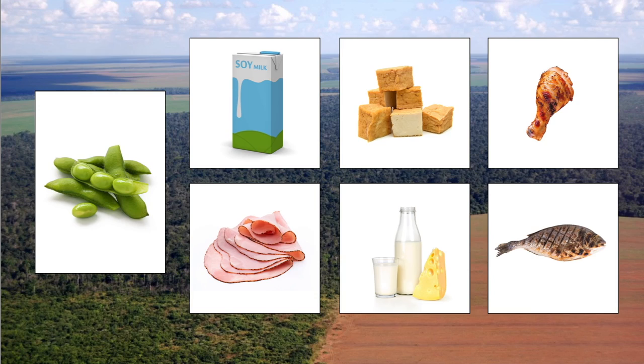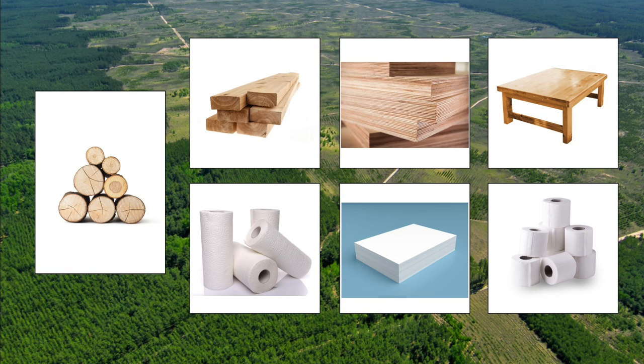Next, we've got the soybean industry. Soy can be found in a wide variety of health food products. But surprisingly, 70% to 75% of all soybeans enters the food supply indirectly, used as feed for chickens, pigs, dairy cows, and farmed fish. And lastly, we've got the wood industry. Wood from deforestation enters the market either as building materials, furniture, or paper.